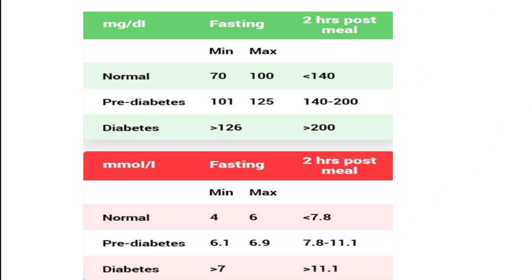Two hours post meal, also called post-prandial, means two hours after food intake. The normal post-prandial blood sugar level is below 140 mg per dL. So for a healthy person: fasting is 70 to 110 mg/dL and 2 hours post meal is less than 140 mg/dL.